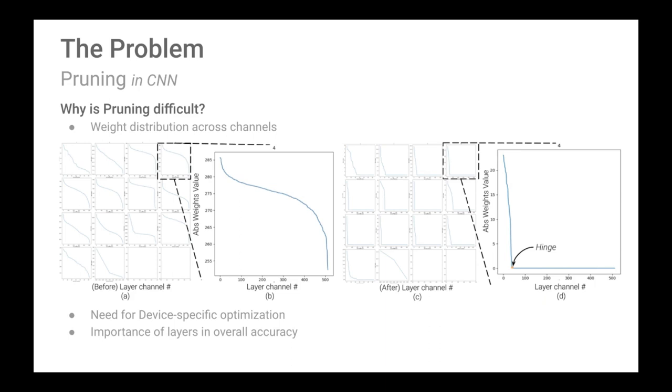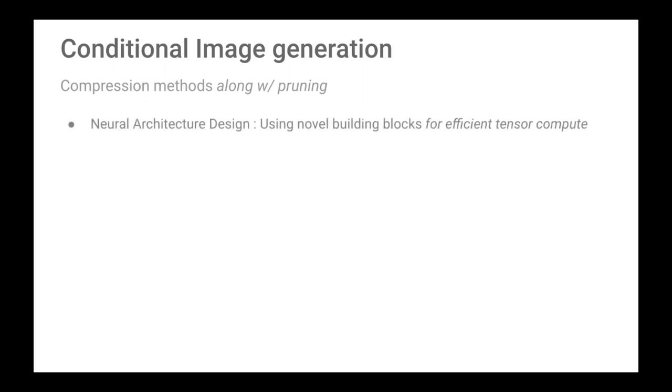In this work we are trying to answer these questions raised above, especially for conditional image generation. We are discussing compression methods along with pruning. First, neural architecture design works exploit costly tensor blocks within architectures and replace them with lightweight ones or perform tensor compute in an efficient manner. Neural architecture search algorithmically searches for efficient architectures. This search is highly non-linear with high compute and time complexity.